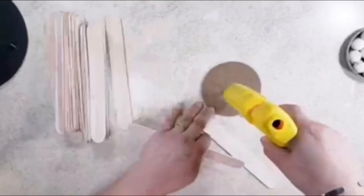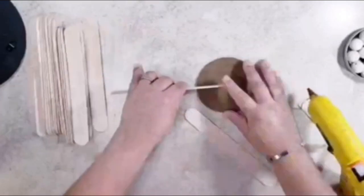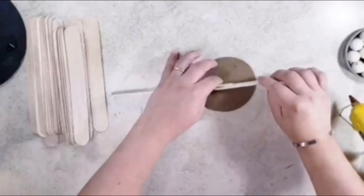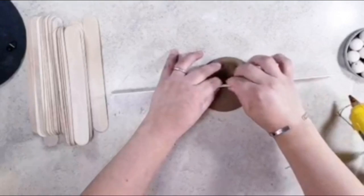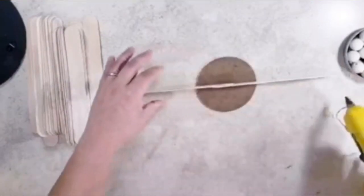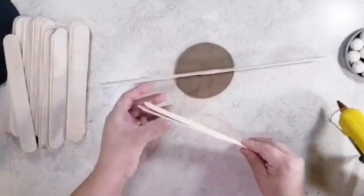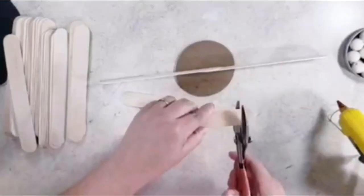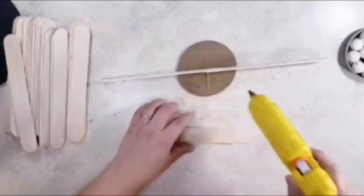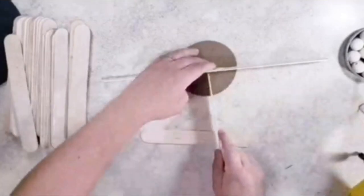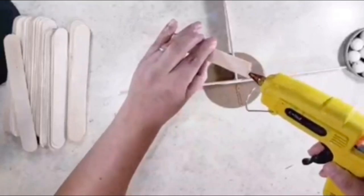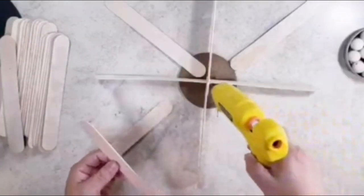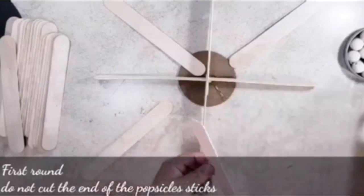The first thing I will be doing is I'm going to start gluing some popsicle sticks sideways. I am going to start with one first and then gluing one on top of the other. To two of them I will be cutting a little bit off, then gluing them to the circle and I'm going to make a cross. For the first round I will not be cutting the round part off. I will be gluing four of them.